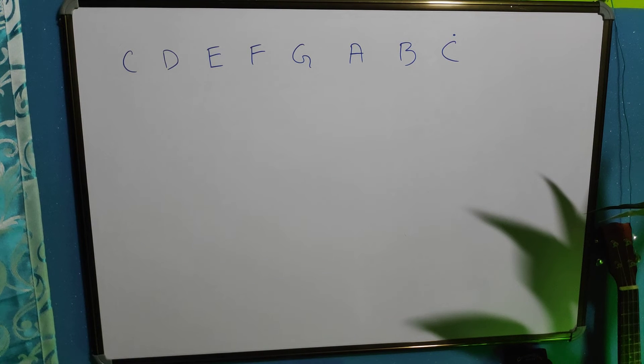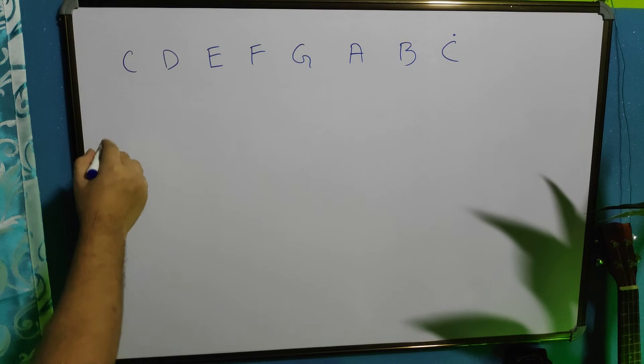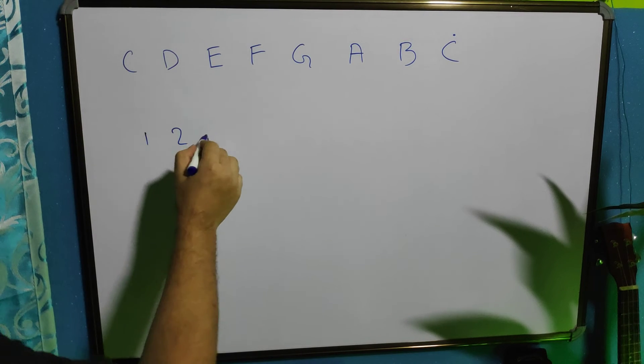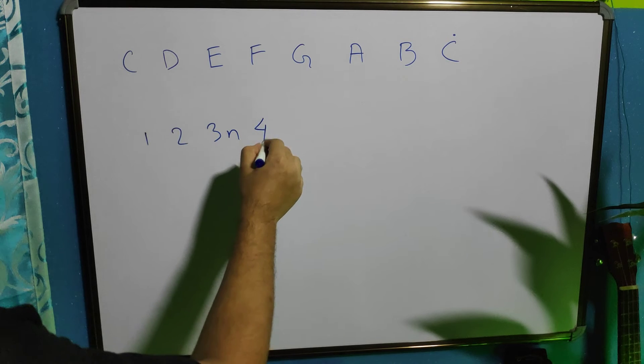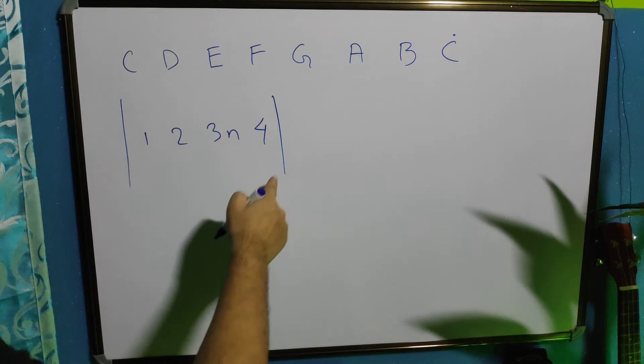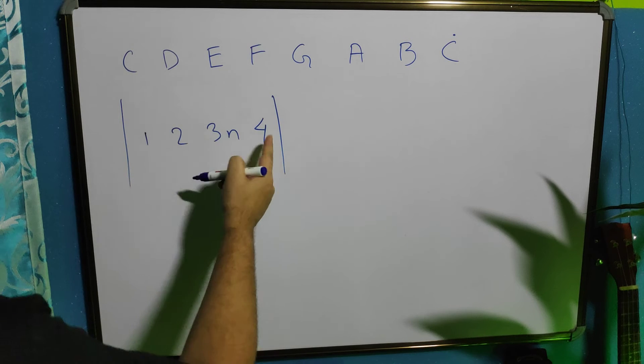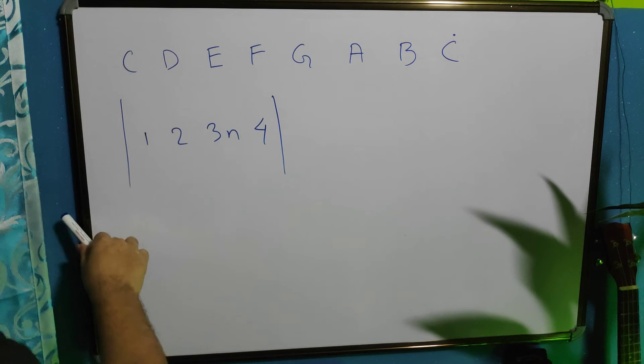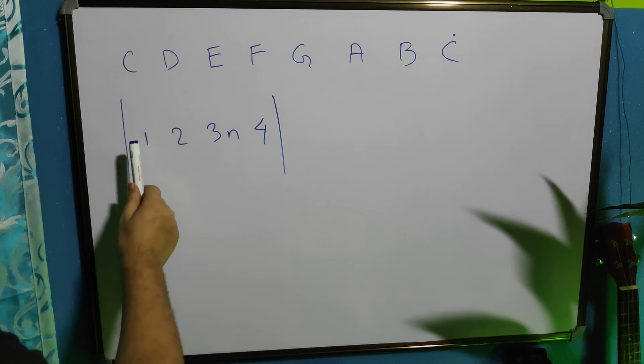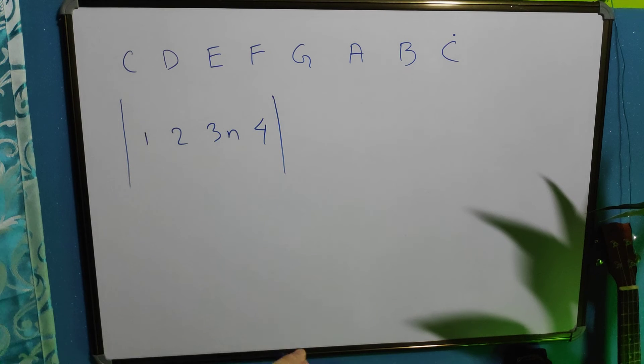Now, we will learn some basic rhythm patterns. 1, 2, 3 and 4. This is the bar. And 1, 2, 3 and 4. 1, 2, 3 and 4. 1, 2, 3 and 4. That's how it goes.